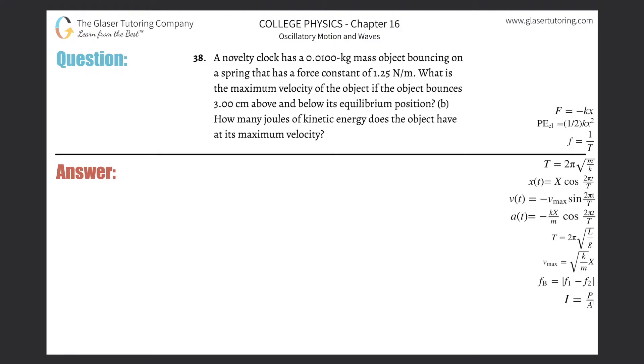Number 38, a novelty clock has a 0.01 kilogram mass object bouncing on a spring that has a force constant of 1.25 newtons per meter. What is the maximum velocity of the object if the object bounces three centimeters above and below its equilibrium position?